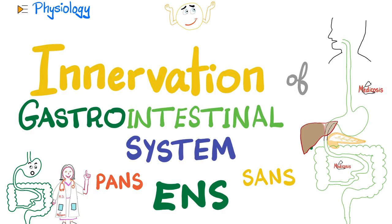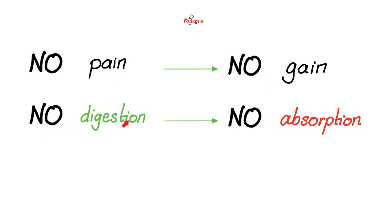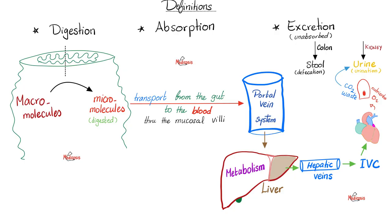No pain, no gain — no digestion, no absorption. If you cannot digest the food that you eat, you're not going to be able to absorb it. What's normal is: you digest your food, breaking it down from macro to micro molecules. These micro molecules are small enough to be absorbed into the bloodstream, usually via the portal venous system, then sent to the liver for metabolism. Before you know it, you have nutrients to give to all of your body via arterial blood supply.